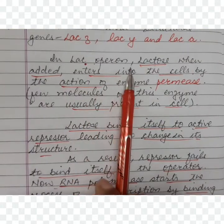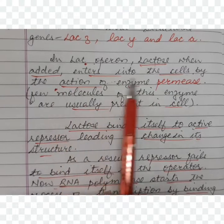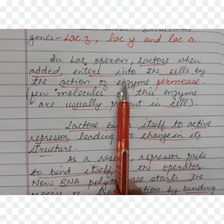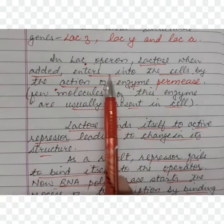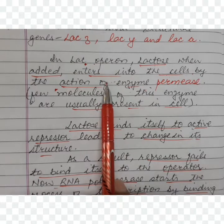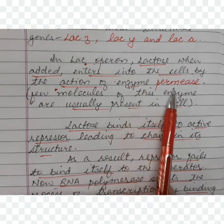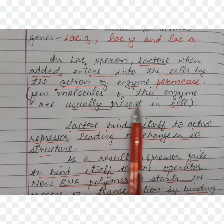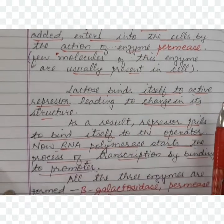When lactose is provided to bacterial cells from outside, a little lactose enters into the cell by the action of the enzyme permease. A few molecules of this enzyme are already present in the cell.